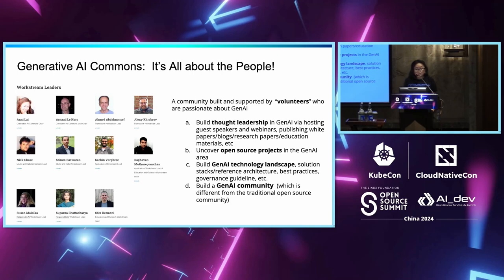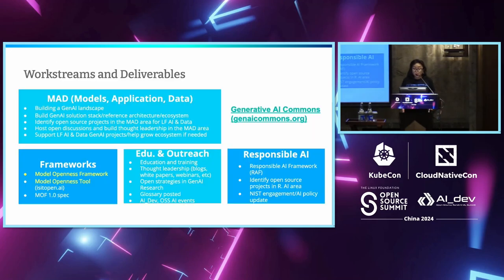All of our track leaders are volunteer-based, and we build thought leadership and work on open source projects in the Gen AI space. Currently we have four work stream groups. The first is called MAD, which stands for Model Application Data. We work on projects in the model application data space. We're currently working on building a landscape, and after that we'll work on building a reference architecture, best practices, and ecosystem.